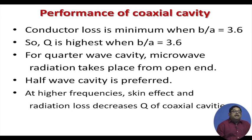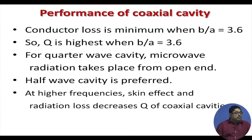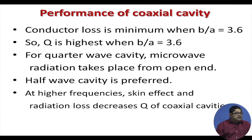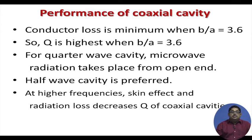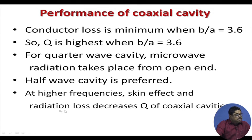For the quarter-wave cavity one problem is that since one end is open, energy may leak out from there — microwave radiation can take place from the open end, increasing loss and degrading Q. That is why the half-wave cavity is generally preferred over the quarter-wave cavity: both ends are shorted, so the wave is confined and leakage of microwave radiation does not occur. Above 1 GHz, the problem with coaxial cavities is that the skin effect increases conduction loss and radiation loss increases as well. Both effects decrease the Q of coaxial cavities, so at higher frequencies people do not use coaxial line cavities.